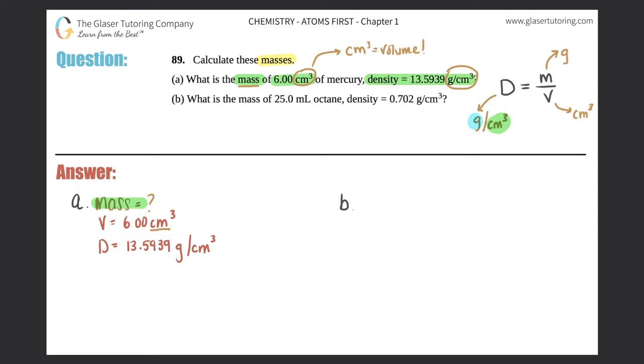We have centimeters cubed for the volume, so let's plug in and solve. D equals m over v. The density was 13.5939 equals X over 6.00. This is pure cross multiplication. Let's do it in the calculator. X would equal the mass.